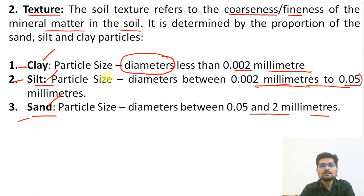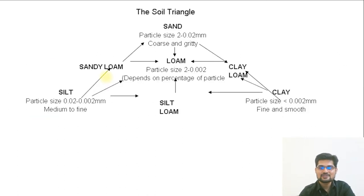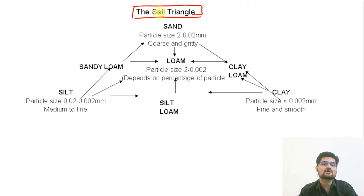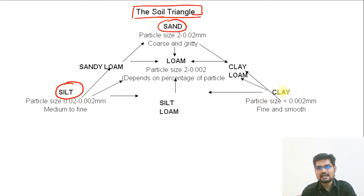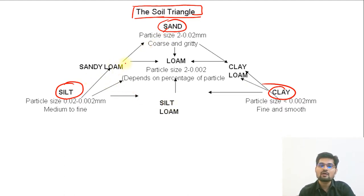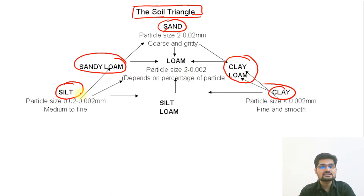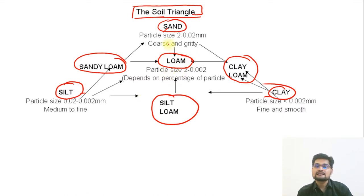Now let's learn about the proportion of these particles using the soil triangle. At the three corners of this triangle are sand, silt, and clay. When there is a mixture of silt and sand, sandy loam is formed. When there is a mixture of sand and clay, clay loam is formed. When there is a mixture of silt and clay, silt loam is formed. Loam is the mixture of all three — sand, silt, and clay — in a given proportion. Draw this triangle on a piece of paper and practice it.